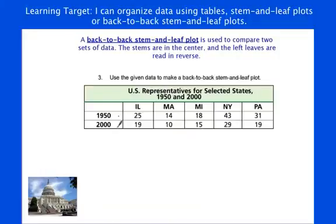For 1950, I have 14, 18, 31, 25, and 43. For 2000, I have 10, 15, 19, 19, and 29. 1, 2, 3, 4, 5. 1, 2, 3, 4, 5 for both years.